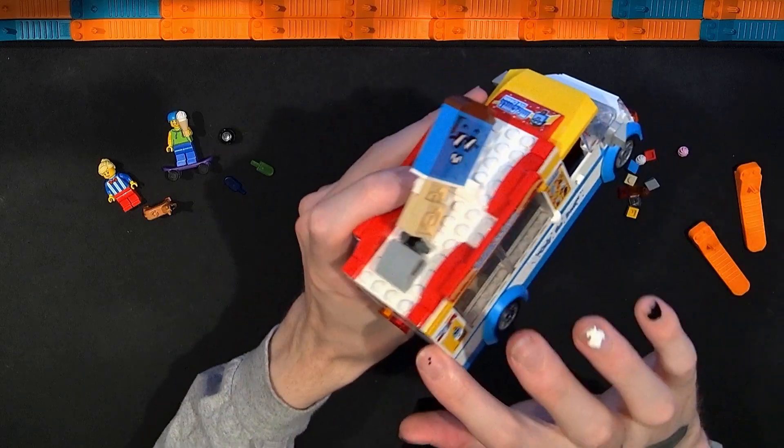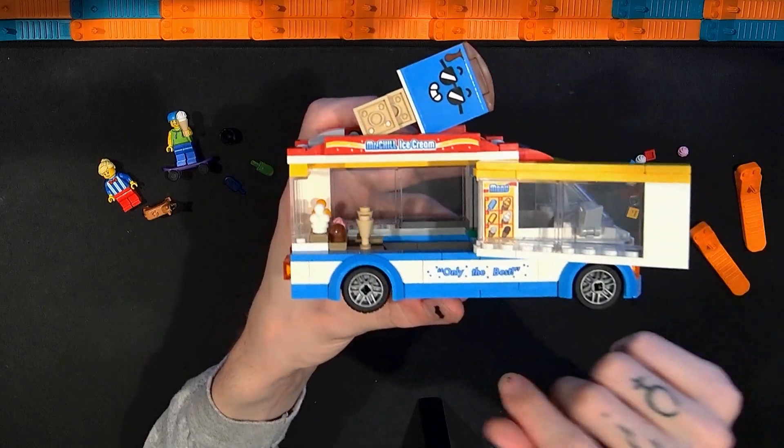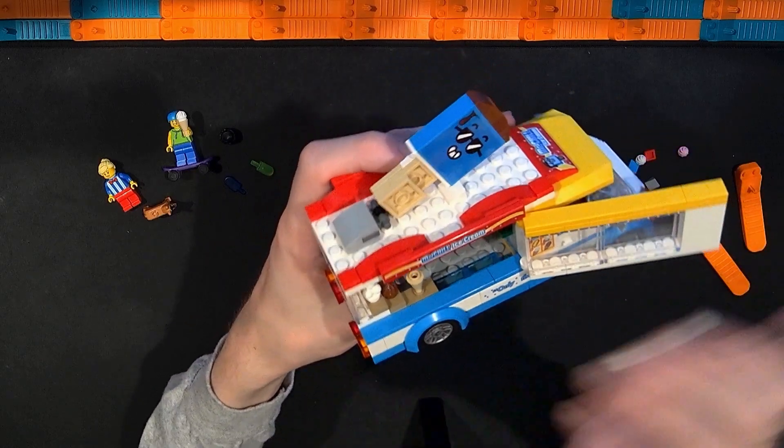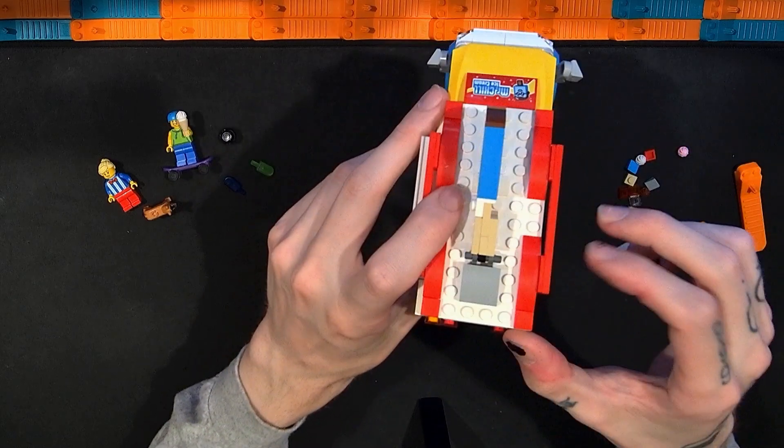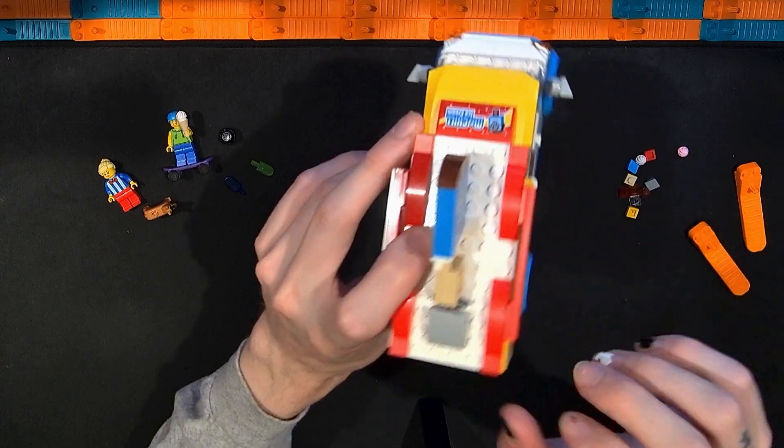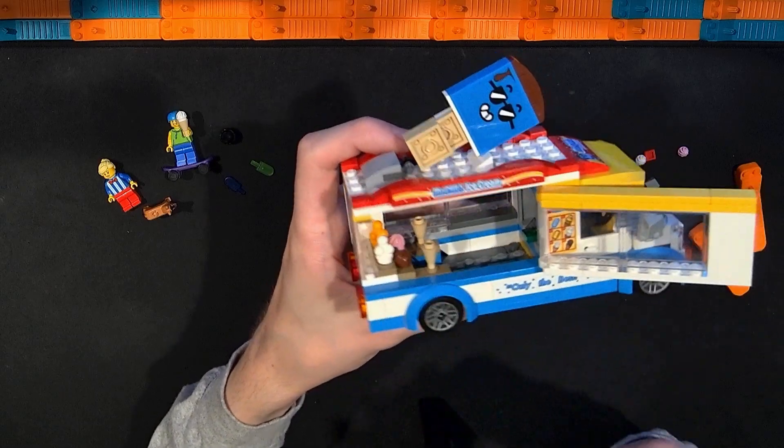But as you already may have seen like other vehicles in the city line like this we do have some access here. So we can open up this whole side. It's tiled out at the top. Has hinges. Closes up. You wouldn't really notice that that's a possibility but for play and everything it's really really good to get more access in there. So you could stud a minifigure down and whatever.